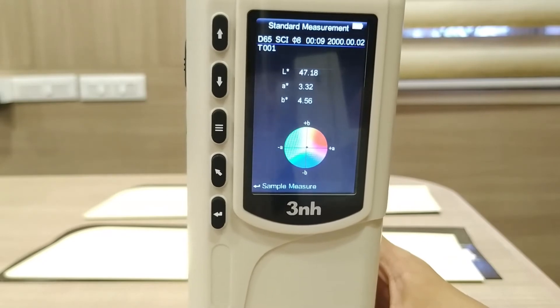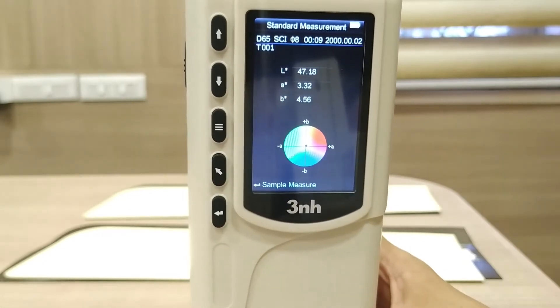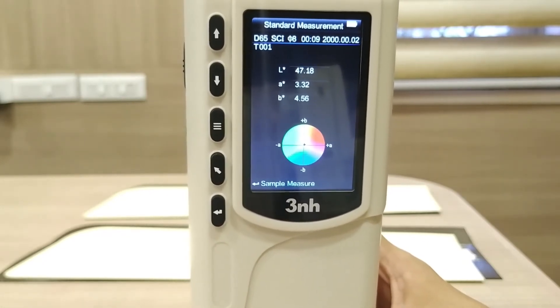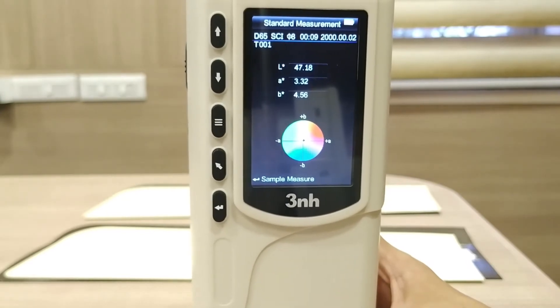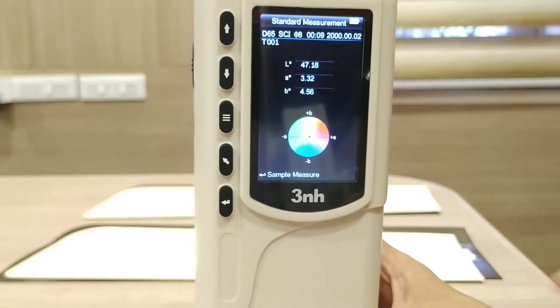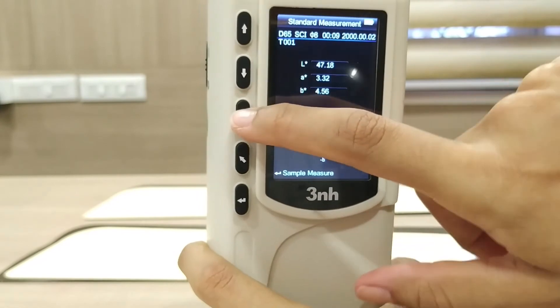In this instrument you can also set tolerance levels which will automatically indicate whether your sample has passed a failed test. To set tolerance levels, click on the menu button. Here you have an option called tolerance.